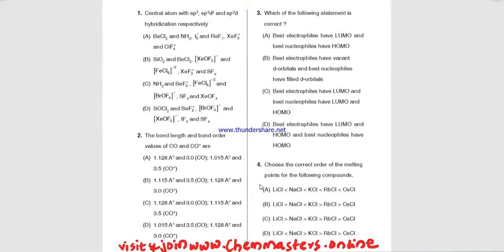Hi guys, in this video we are analyzing the Telangana State 2018 Chemical Sciences exam. Watch the video completely to get a detailed conceptual analysis. Just look at the given problem: central atom with sp3, sp3d2, and sp3d hybridization respectively.